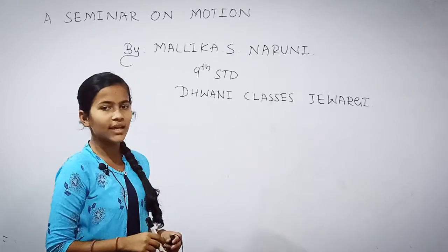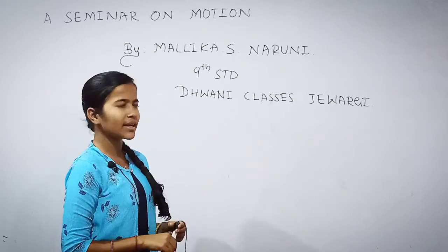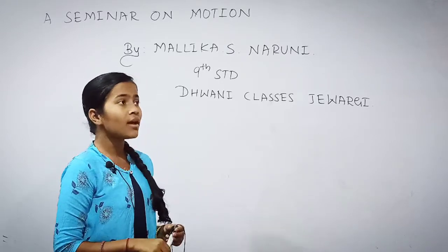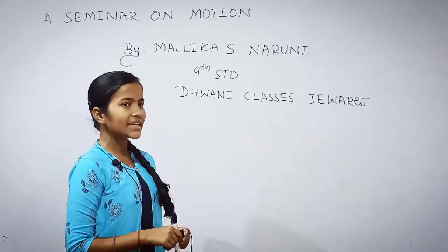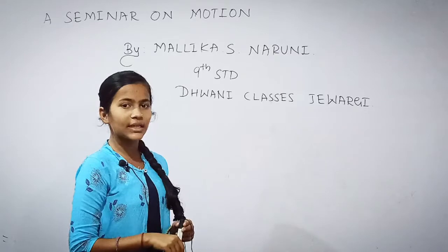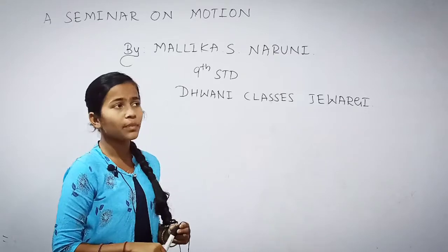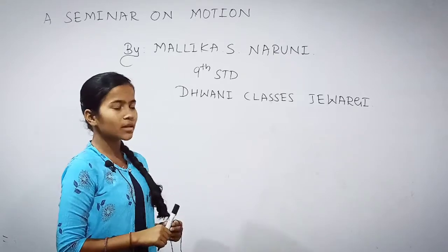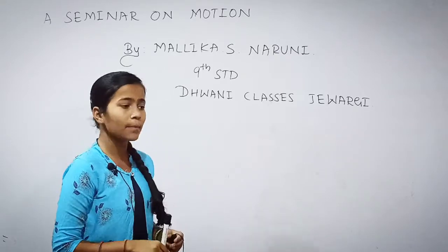There are two types of non-uniform motion: accelerated motion and de-accelerated motion. Accelerated motion means increase of speed over time. De-accelerated means decrease of speed over time.